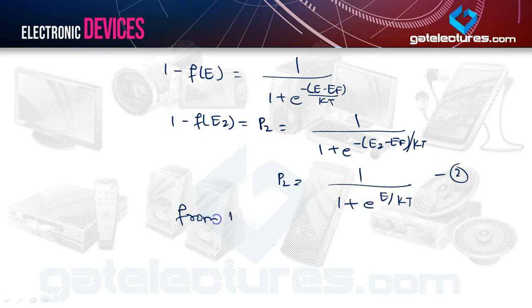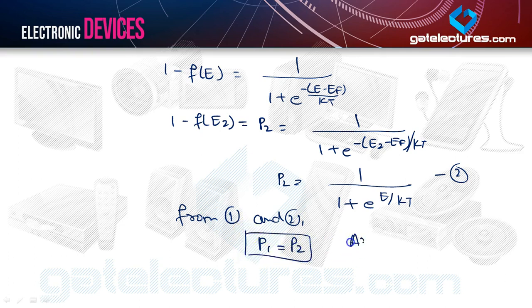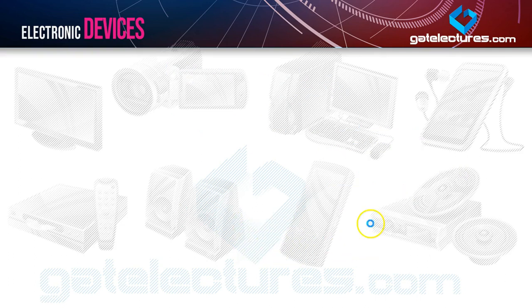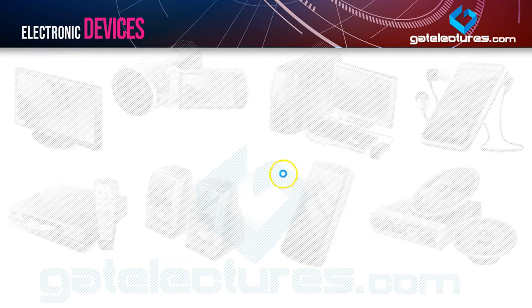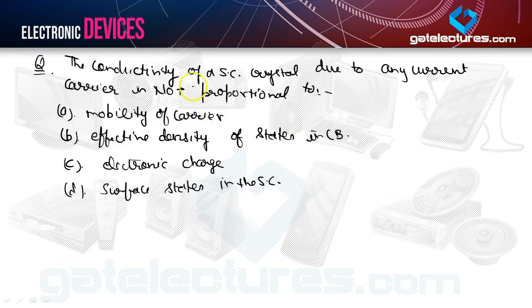P2 equals 1 minus F(E2), which equals 1 over (1 plus e to the power minus (E2 minus E_F) / kT). Since E2 minus E_F equals minus e, this becomes 1 over (1 plus e^(e/kT)). Comparing equations 1 and 2, we get P1 equals P2, so the correct option is B.